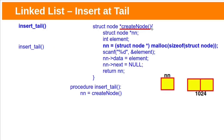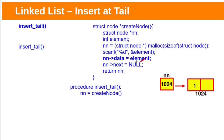This createNode function will allocate memory for a linked list node on the heap by using the malloc function. The base address of the allocated memory is stored in the new node pointer. This function is not taking any argument, so it reads the element from the terminal. That value will be stored within the new node data field. Initially, the newly created node link field will be null. This createNode function will return the new node address.